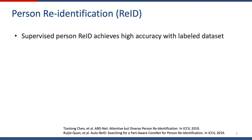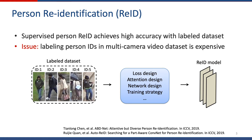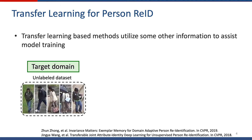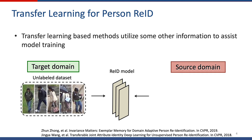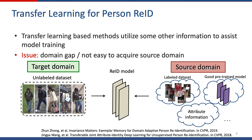Supervised person re-ID achieves high accuracy with labeled datasets. However, labeling person IDs in multi-camera video datasets is expensive. A line of work focuses on transfer learning. Suppose we have an unlabeled dataset in the target domain; we want to train a model with source domain information, such as a labeled dataset, a good pre-trained model, or attribute information. Transfer learning-based methods suffer from domain gaps, and in application, source domain data is still not easy to acquire.